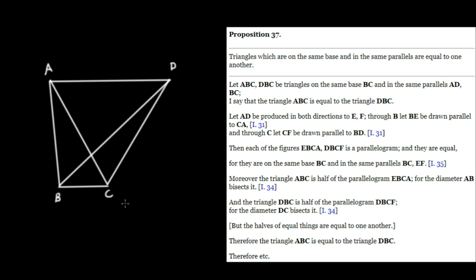The claim is that these two triangles, which are on the same base and in the same parallels, since AD is parallel to BC, the claim is that these two triangles are equal.